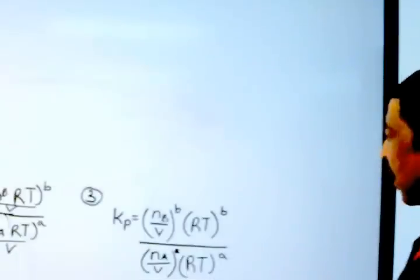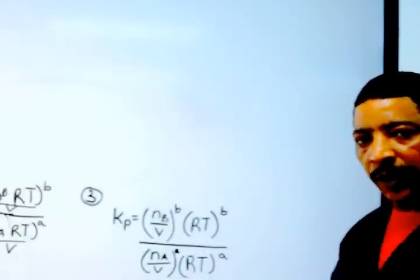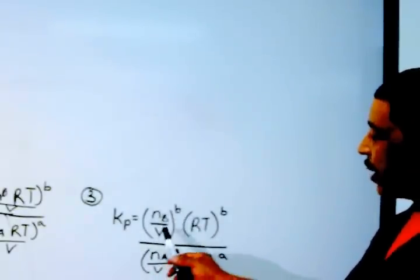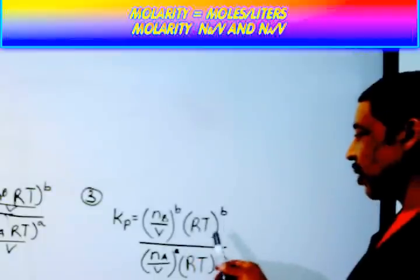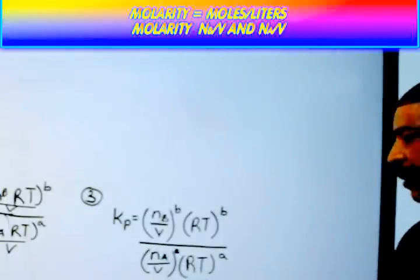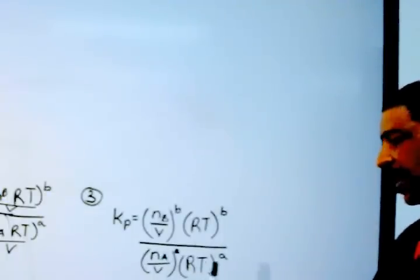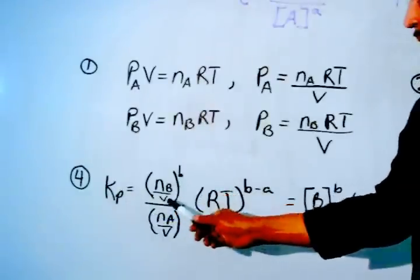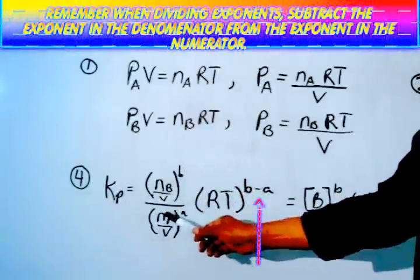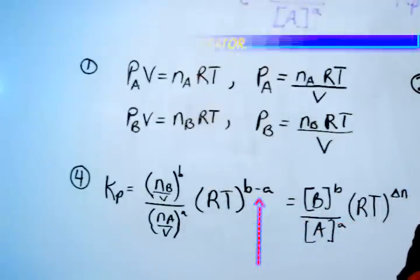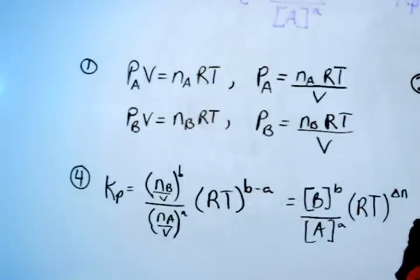Now simply factor out RT. This gives the following relationship, where Kp is now equal to moles of B divided by volume, raised to the b power, times RT raised to the b power, divided by moles of A divided by volume, raised to the a power, times RT raised to the a power. The formula may be rewritten as Kp equals (n_B / V)^b divided by (n_A / V)^a, all times RT raised to the (b minus a) power.